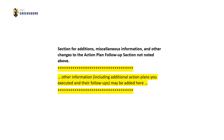In this optional section, the user is provided with an editable text area where other information regarding action plan follow-ups may be provided. For example, did you execute an action plan that wasn't listed in the template provided? If so, here's the spot to list that action plan and its associated follow-up. Other miscellaneous information related to the action plan follow-up section may be provided here as well.